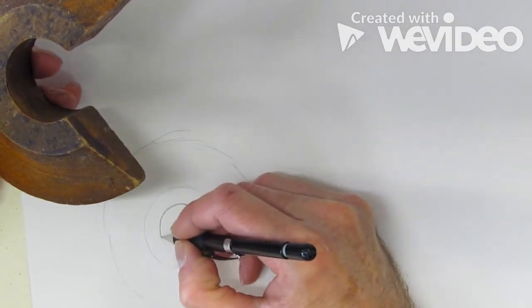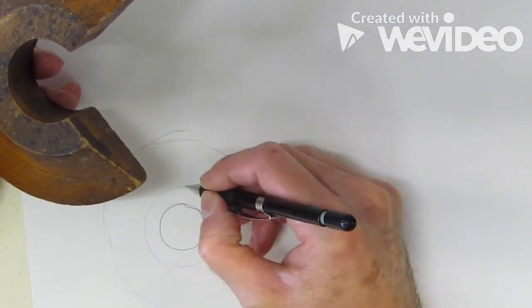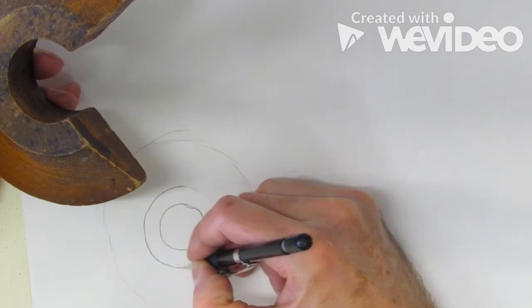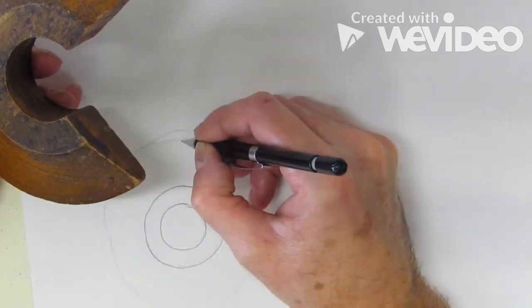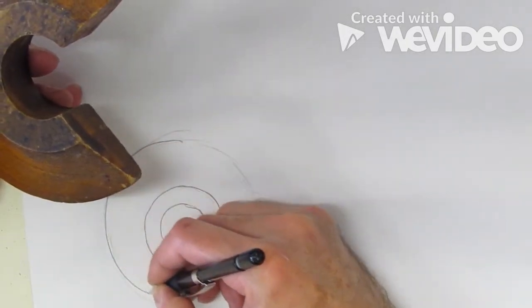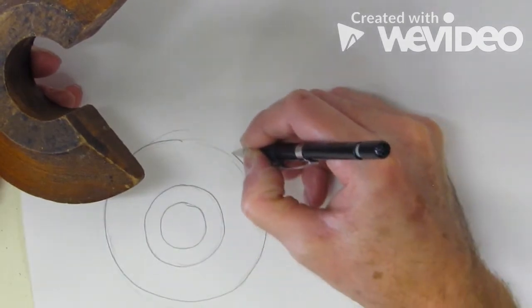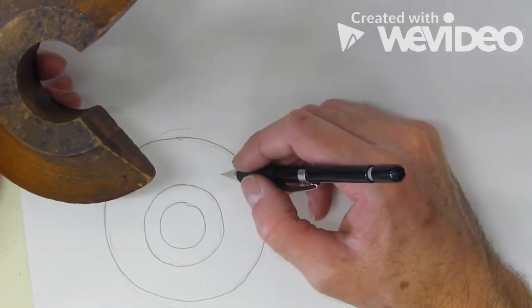So now we can darken this in a little bit if we want. There's our hole. There's the outer edge before the angle. And then here's the whole outer side of our doughnut. And again, it doesn't have to be perfect. It's a sketch. But we're making an orthographic.